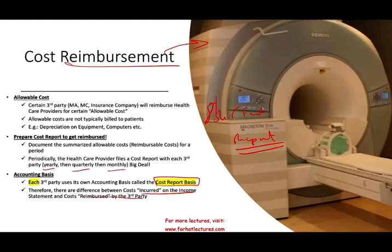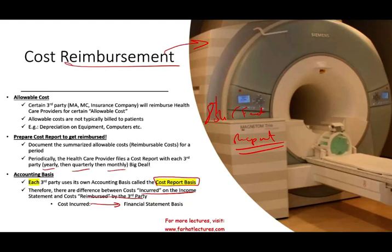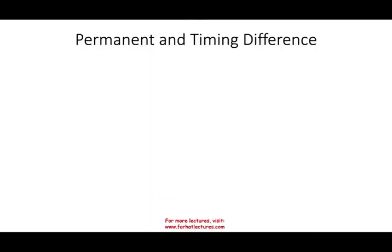Why? Because the way you report your cost report is different from how you prepare your financial statements. So we have cost incurred, which is the financial statement basis — usually accrual — and cost reimbursed, which is the cost report basis. That means there's a difference between the two. There are permanent and timing differences.